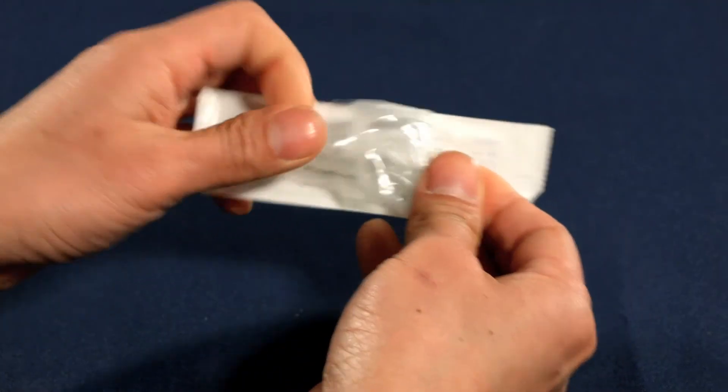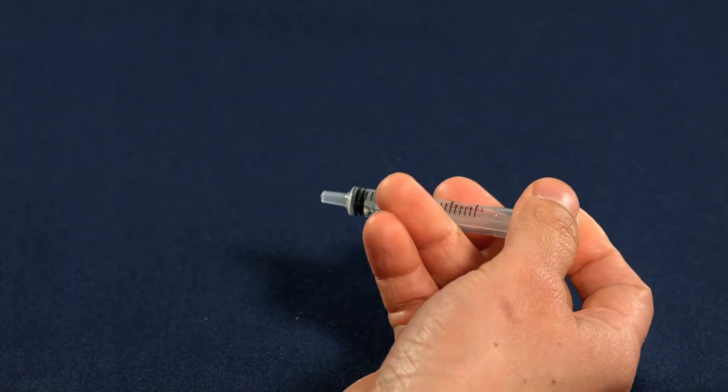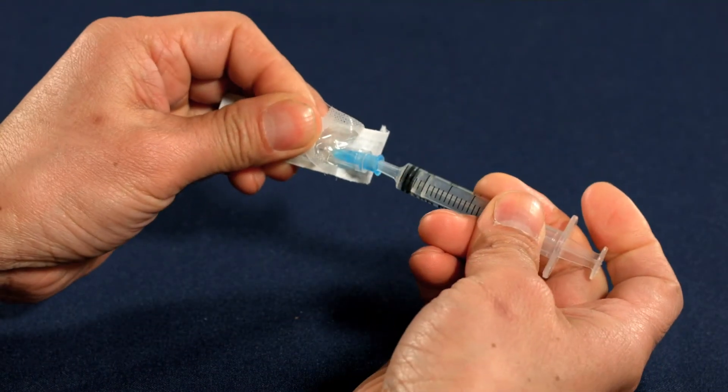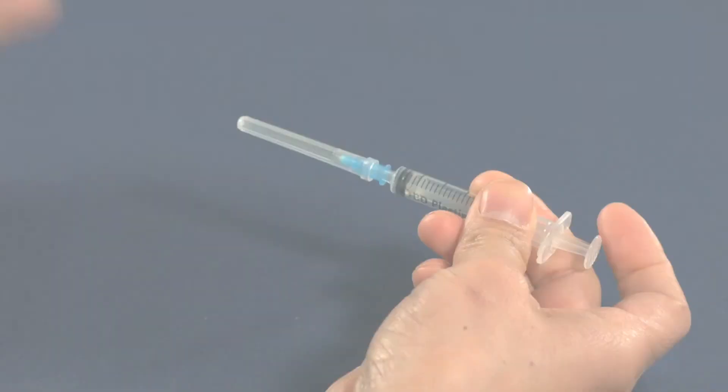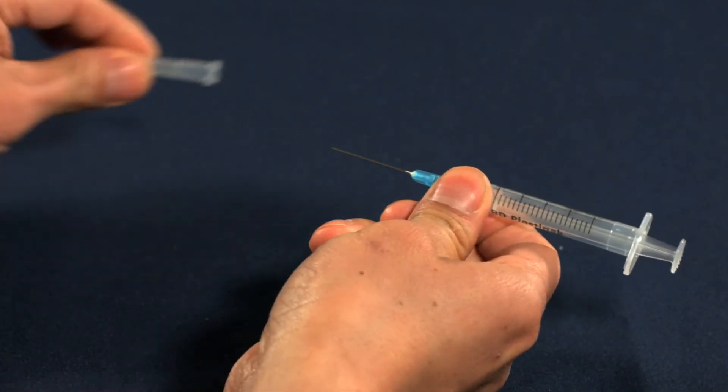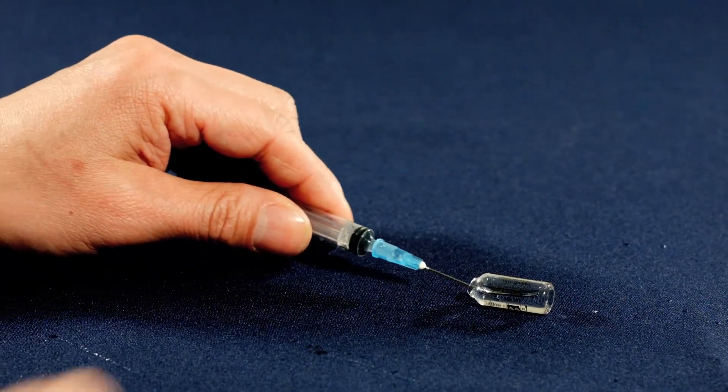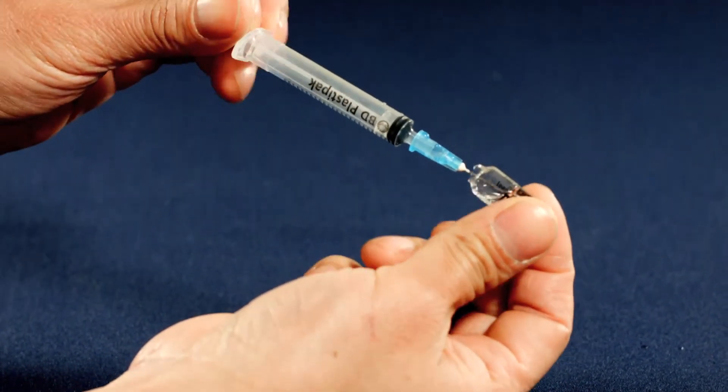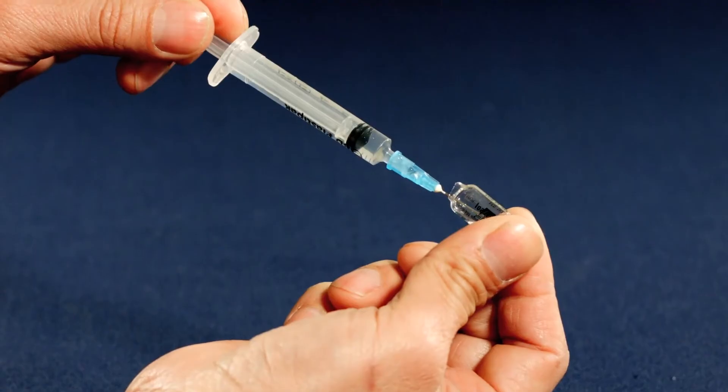Peel open the syringe and attach the needle, pushing firmly to connect. Carefully remove the shield. Hold the ampule with your non-dominant hand and draw up all the liquid from the ampule with your other.